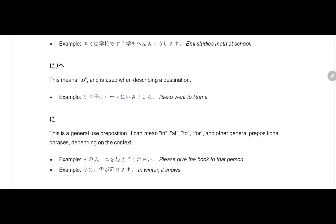Ni or e. This means 'to' and is used when describing a destination. Reiko wa Roma ni ikimashita. Reiko went to Rome. Ni means 'to' to describe a destination. Reiko wa Roma ni ikimashita. Reiko went to Rome.